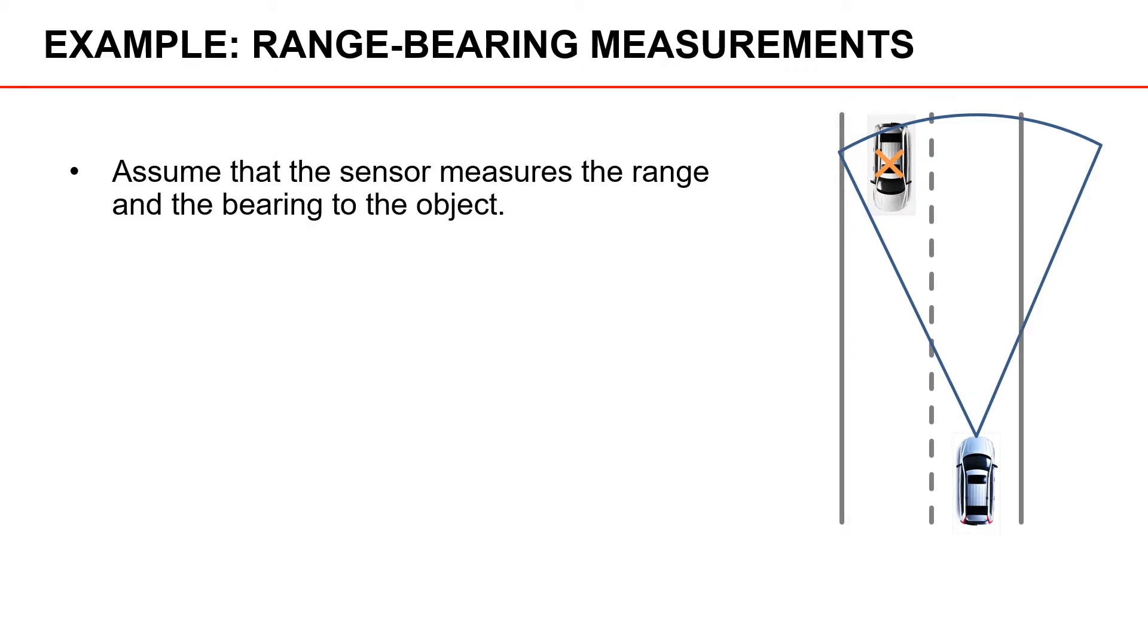Let's take an example where we assume that we have a sensor that gives us range and bearing measurements. So we have an autonomous car with a field of view, and there's one more vehicle inside the field of view. We can mark the coordinate frame by the sensor with these two axis arrows. And then, assuming that the sensor is a range-bearing sensor, what we measure is the distance from the sensor to the other car and the bearing or the angle from the sensor to the other car.